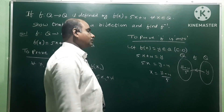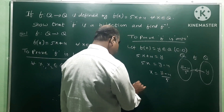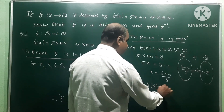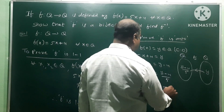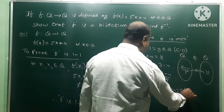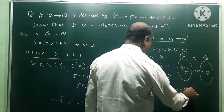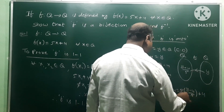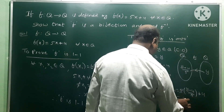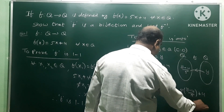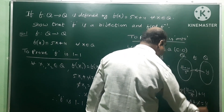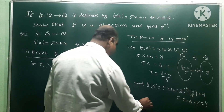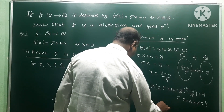To verify, substitute x = (y - 4) / 5 back into f(x): f(x) = 5 × (y - 4)/5 + 4. The 5s cancel, giving y - 4 + 4 = y. Therefore f(x) = y, which confirms f is onto.